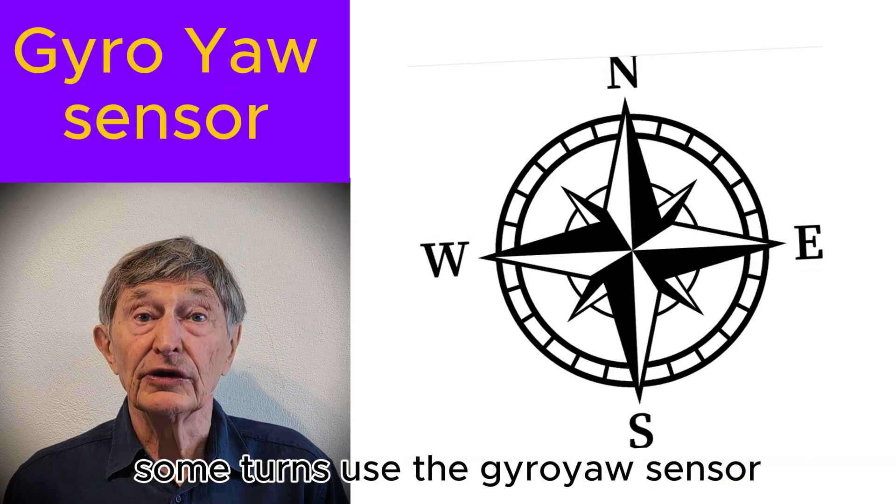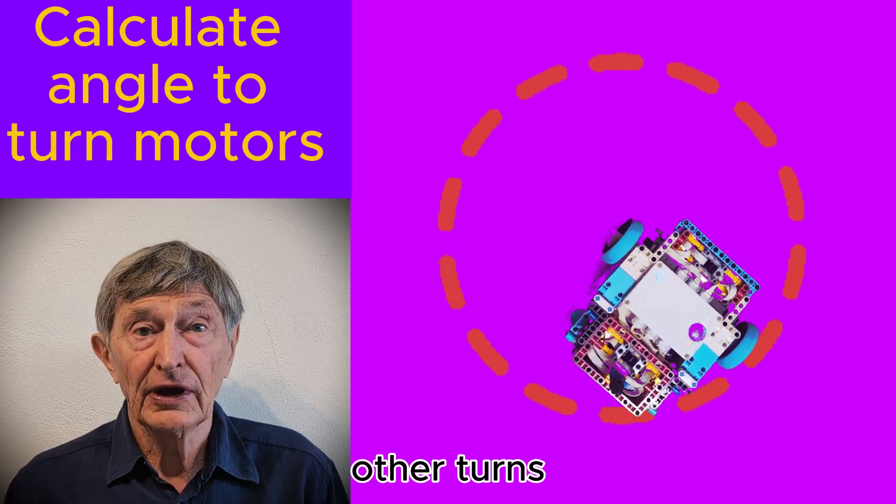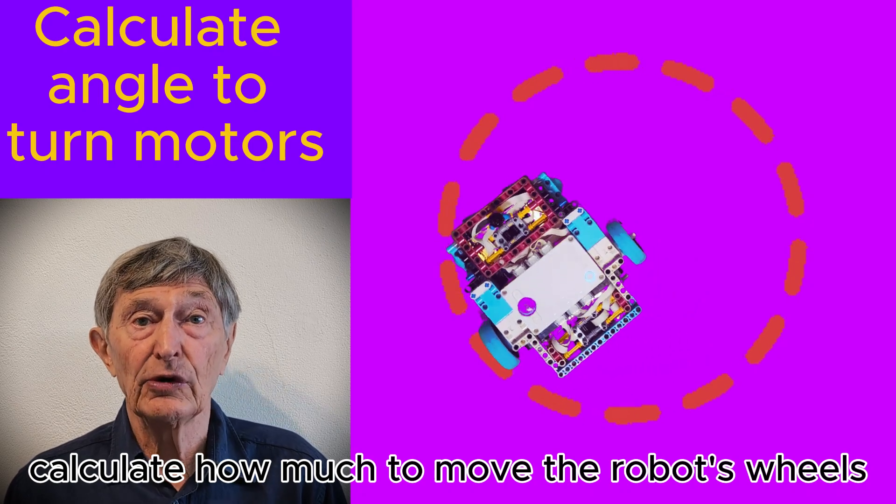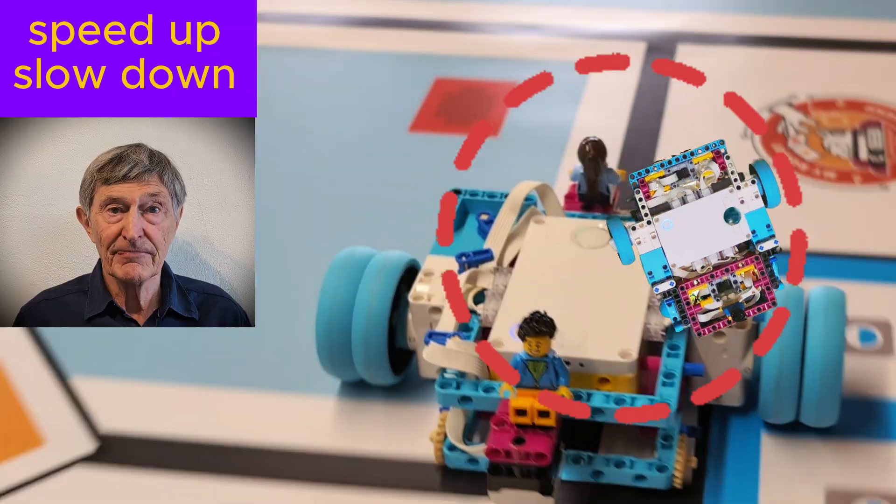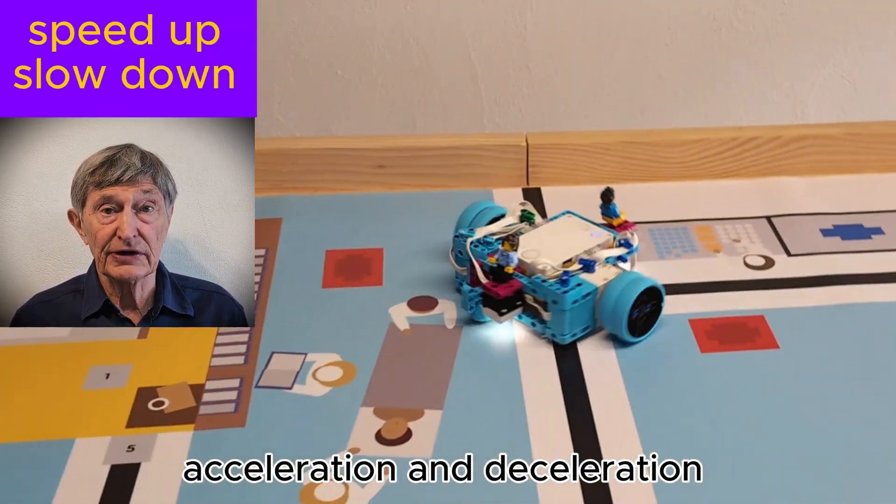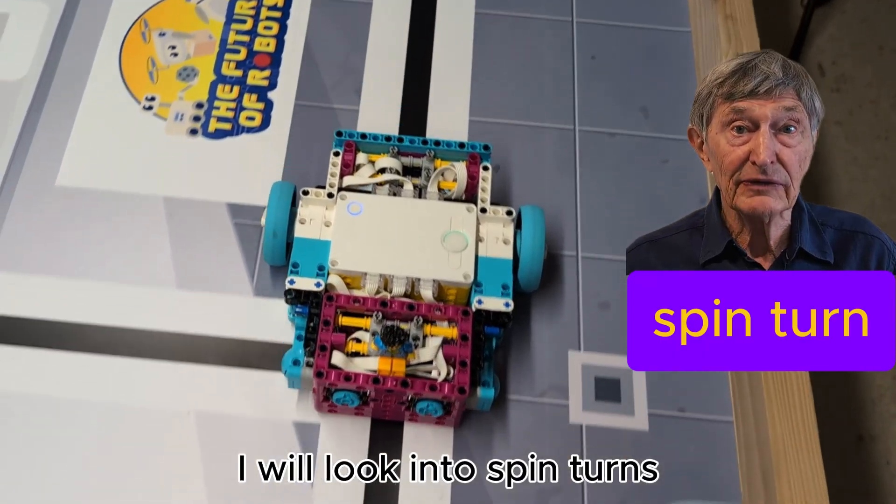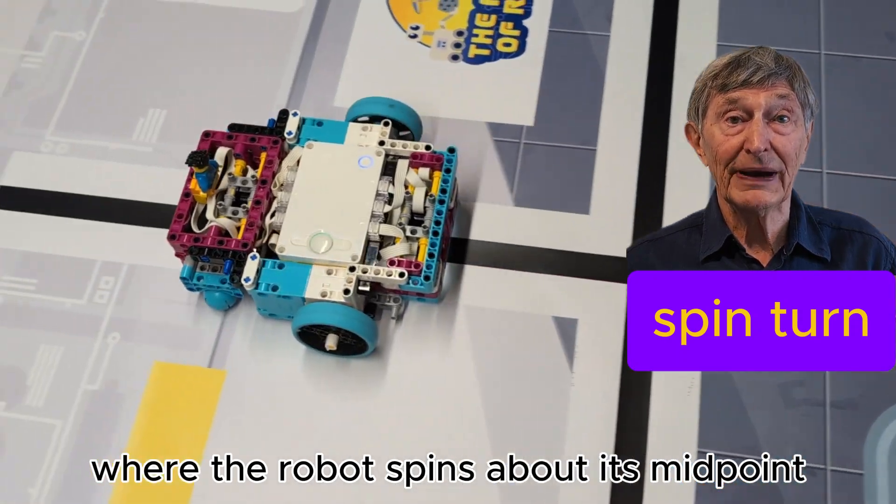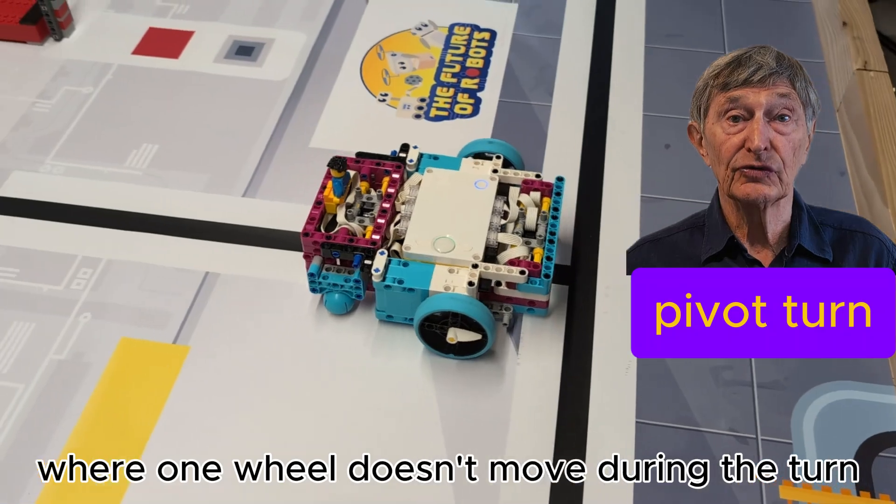Some turns use the gyro yaw sensor to give an accurate turning angle. Other turns calculate how much to move the robot's wheels for a given angle without using the yaw sensor. There is also the question of acceleration and deceleration to reduce slip during a turn. I will look into spin turns where the robot spins about its midpoint and pivot turns where one wheel doesn't move during the turn.